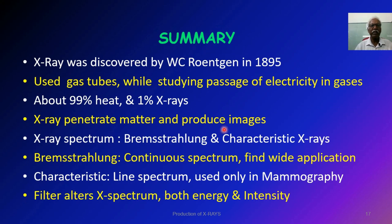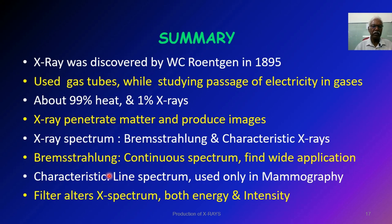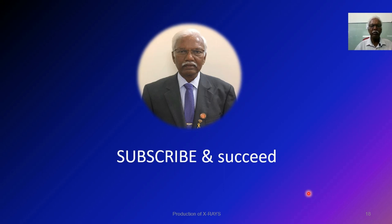In summary, X-rays were discovered by W.C. Röntgen in 1895, who used gas tubes while studying the passage of electricity in gases. X-ray production consists of approximately 99% heat and around 1% X-rays. X-rays penetrate matter and produce images. The X-ray spectrum consists of Bremsstrahlung — a continuous spectrum with wide application — and characteristic X-rays, a line spectrum used especially in mammography. Filters alter the spectrum in both energy and intensity. I hope the video is beneficial to you. We will meet in the next lecture — kindly subscribe and succeed. Thank you.